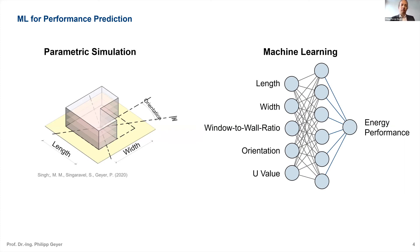Parametric monolithic models mean you get training data for a parameterized model — for example, an L-shaped building with parameters like length, U-value, and G-value describing thermal conduction and solar heat gains of the facade. You run a bunch of simulations, or ideally get data from real buildings, and train a monolithic model — one piece of machine learning, which can be a neural network or something else. Once trained, you get quick predictions: one millisecond versus a two-minute simulation, so the advantage is quick feedback.